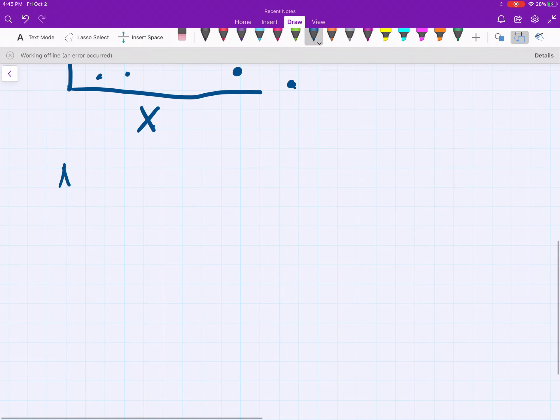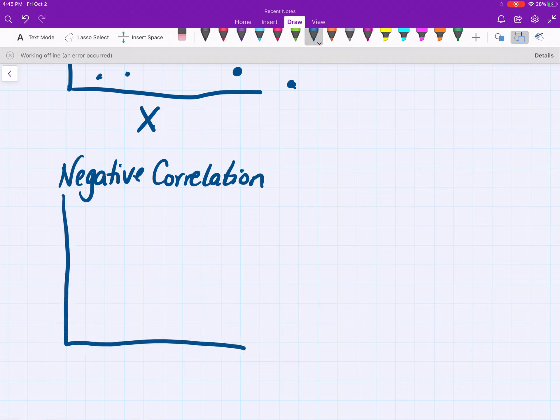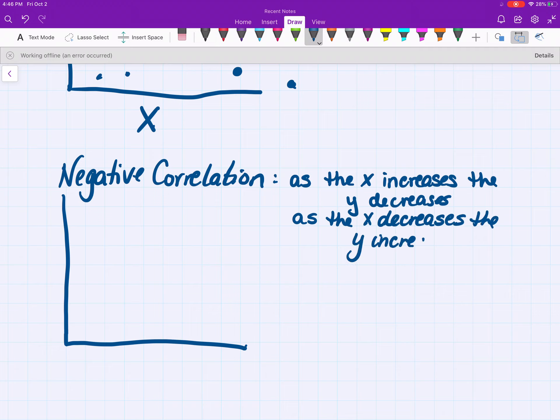Let's talk about a negative correlation. A negative correlation means that the x and the y are kind of going in opposite directions. As the x increases, the y decreases. Or, as the x decreases, as we go backwards on the x, the y is going up. What does that look like? Well, let's draw a quick negative correlation. Do I have some outliers? Absolutely. But in general, you can see here that as x gets bigger, y is going down.